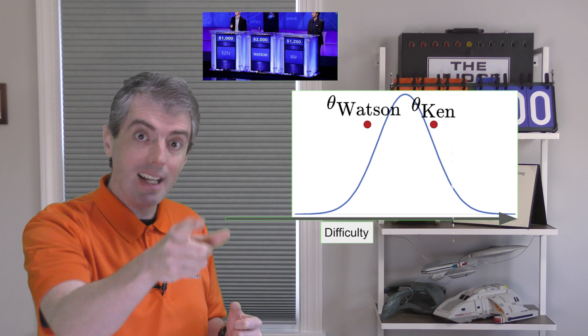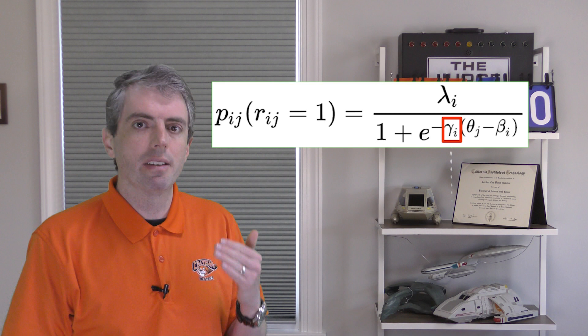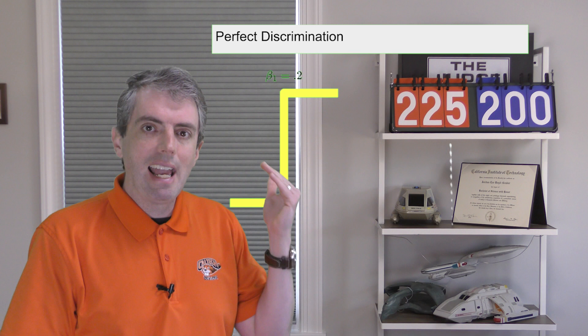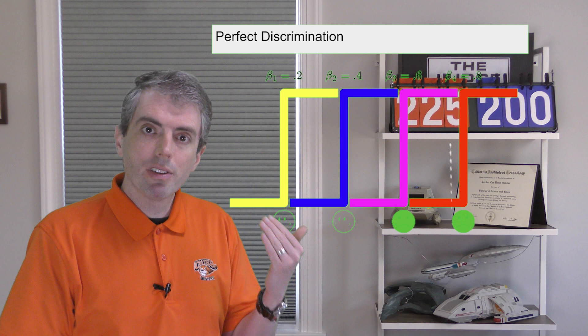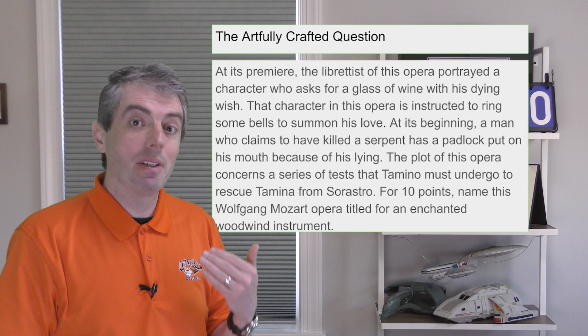On to point two: make sure your questions are discriminative. IRT defines the parameter gamma as a coefficient that measures how clear the signal is from each question. In our previous video, we talked about how infinitely discriminative questions are essentially step functions that let you pinpoint a user's skill. That's impossible, but the more discriminative the question is, the better the question. If I were a dictator of question answering, I'd make every question discriminative by using pyramidal questions that are structured to reward knowledge, where you interrupt the question to show when you know the answer.